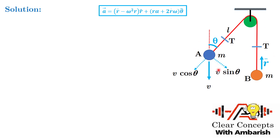Let's look at the solution. On bob B, tension T acts vertically upward and mg acts downward; let its acceleration be r double dot (towards the pulley). For bob B the equation is: T minus mg = m times r double dot. I have reproduced the general acceleration expression derived earlier for reference.